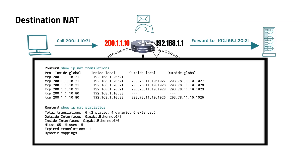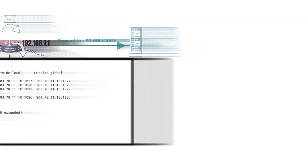The 'show ip nat translations' command displays the current NAT table, showing active translations between private and public IP addresses, helping monitor NAT operations. The 'show ip nat statistics' command provides an overview of NAT performance, including total translations, hits — which indicates the number of times traffic matches an existing NAT translation entry in the NAT table — and misses, referring to the number of times incoming traffic does not match any existing NAT translation in the NAT table, offering insights into the efficiency of NAT and potential issues.